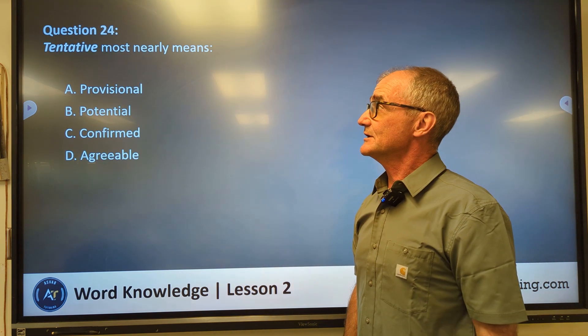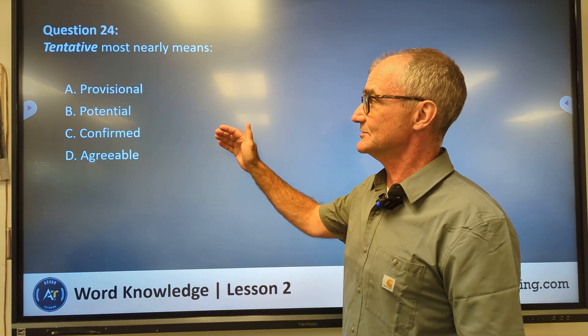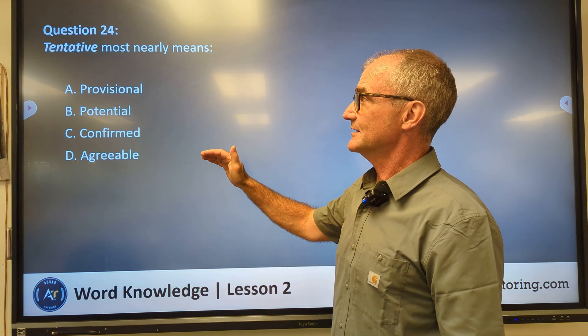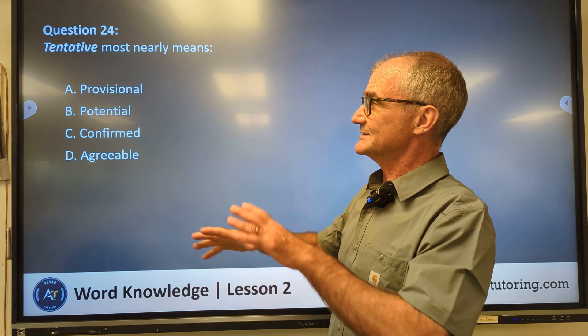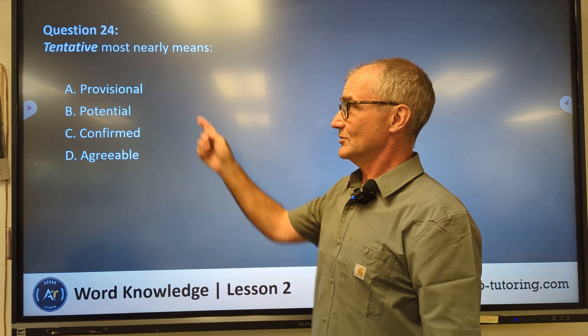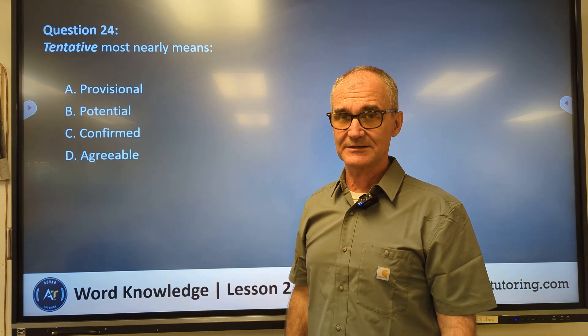Number 24, tentative most nearly means provisional, potential, confirmed, agreeable. This is a little tougher one. Tentative means somewhat hesitant or provisional. So the closest one to tentative is A, provisional.